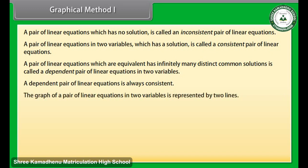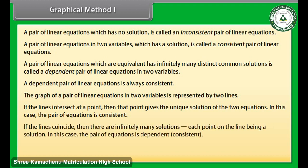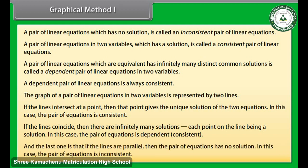The graph of a pair of linear equations in two variables is represented by two lines. If the lines intersect at a point, then that point gives the unique solution of the two equations — in this case, the pair of equations is consistent. If the lines coincide, then there are infinitely many solutions, each point on the line being a solution — in this case, the pair of equations is dependent and consistent. If the lines are parallel, then the pair of equations has no solution — in this case, the pair of equations is inconsistent.